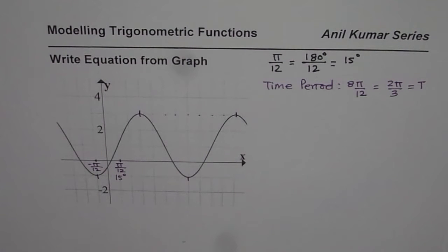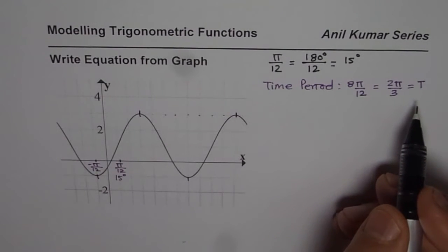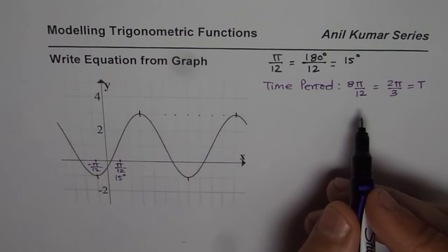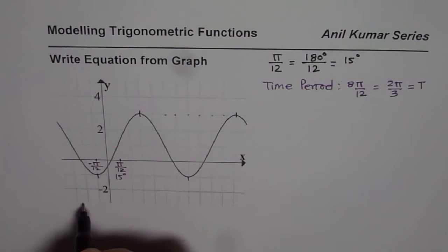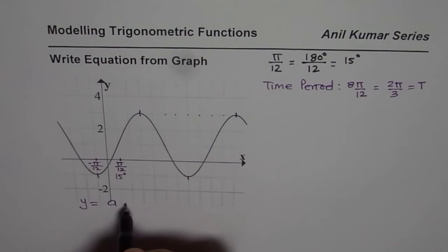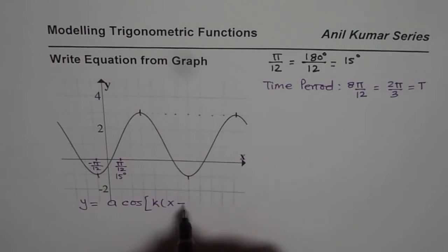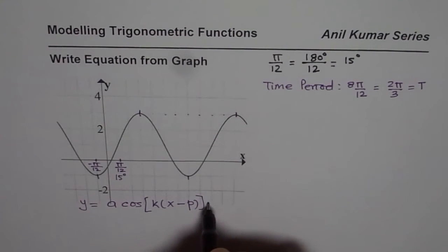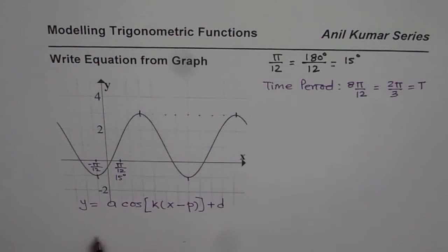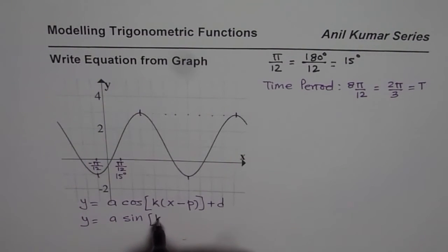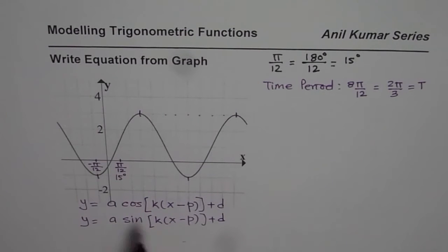Now the value of k can be calculated from the time period. Let me write down the general equation of the trigonometric function. We will write general equation as y = a·cos(k(x - p)) + d the axis. In sine terms we will write y = a·sin(k(x - p)) + d. These are the equations which we will develop from the given graph.